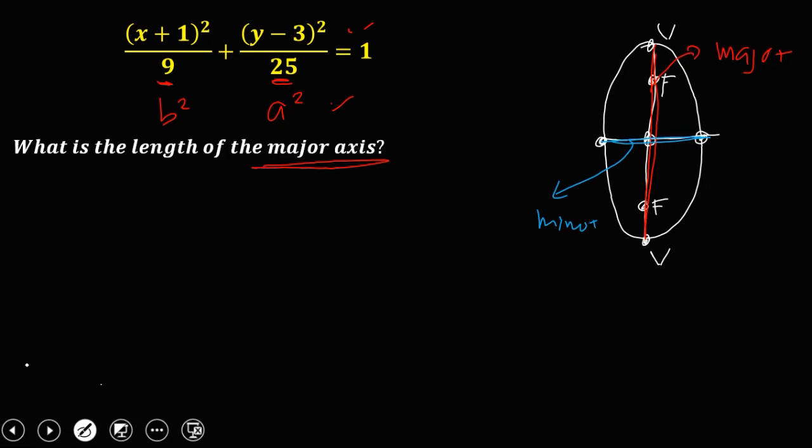Now, in an ellipse, A is the distance from center to the vertex. Then since in the given, A squared is equal to 25, so to solve for A, just take the square root.